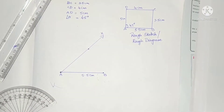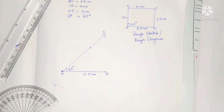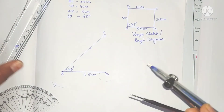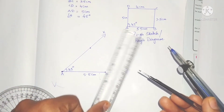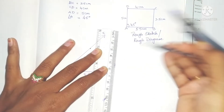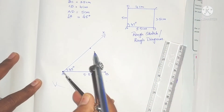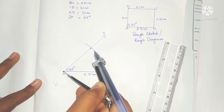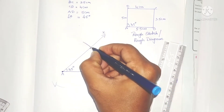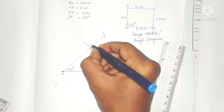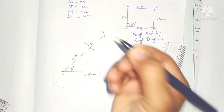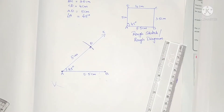The length of AD is 5 centimeters. Take the compass and measure 5 centimeters. Taking A as center, draw an arc on the ray AX. The point of intersection of this arc and the ray is vertex D, so AD = 5 centimeters.